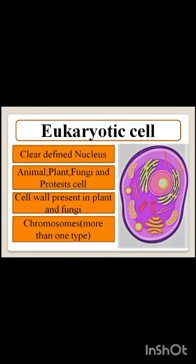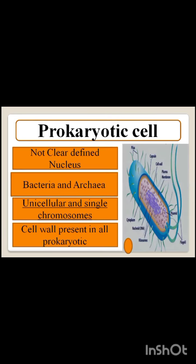In eukaryotic cells, animal, plant, fungi, and protist cells are present. Cell wall is present only in plant and fungi. Chromosomes are more than one type. Now we discuss prokaryotic cells, in which there is no clearly defined nucleus. Bacteria and archaea groups are only present in prokaryotic cells.